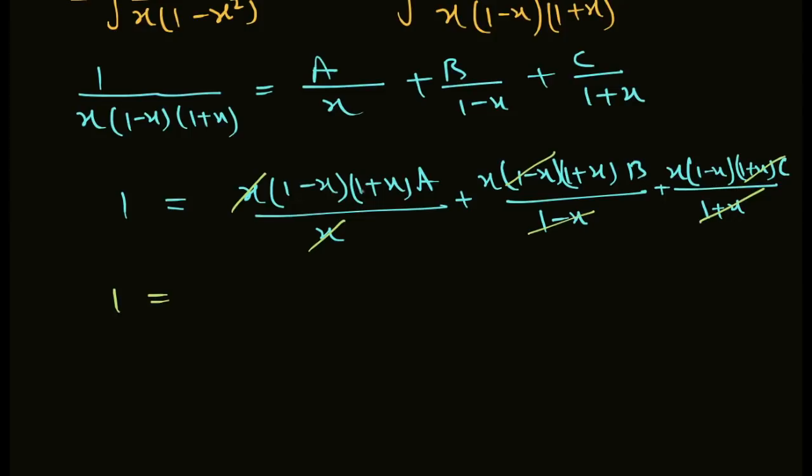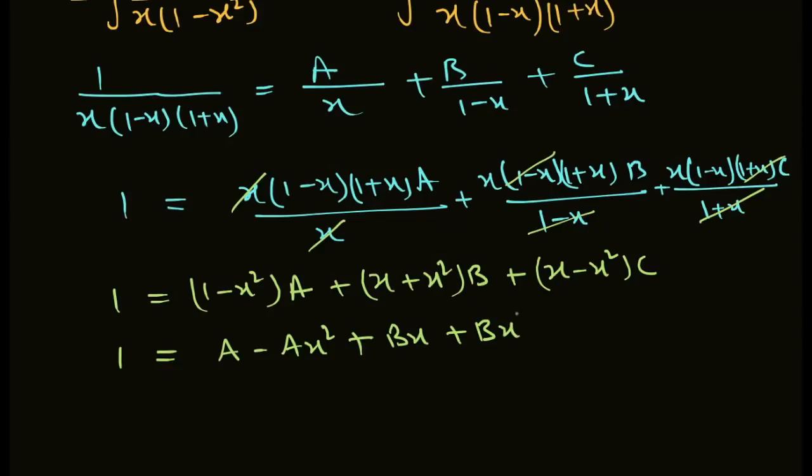1 minus x and 1 plus x is 1 minus x squared. So we have A(1 minus x squared) plus Bx(1 plus x) plus Cx(1 minus x). This equals A minus Ax squared plus Bx plus Bx squared plus Cx minus Cx squared.